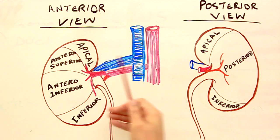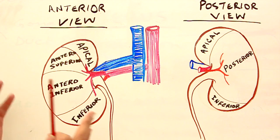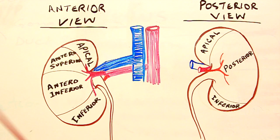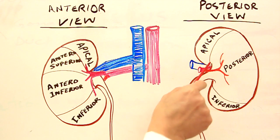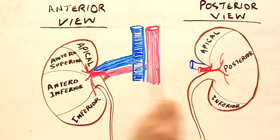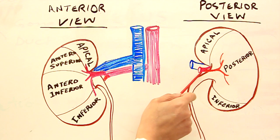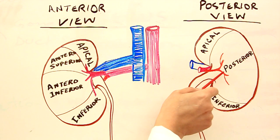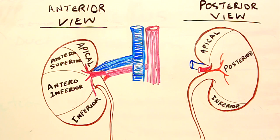These segmental arteries, after crossing the renal sinus, will enter the original lobes of the kidney. As for the posterior division, there is a posterior segment of the same kidney viewed from behind, and the posterior segmental artery enters and serves this segment from behind.